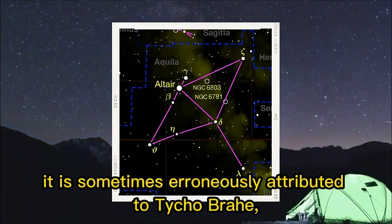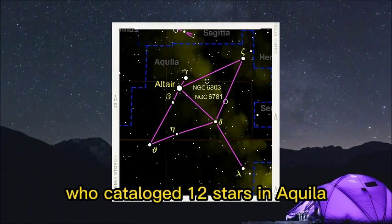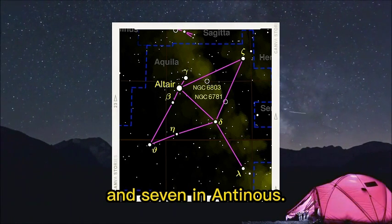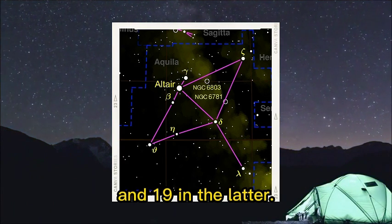However, it is sometimes erroneously attributed to Tycho Brahe, who catalogued 12 stars in Aquila and 7 in Antinus. Hevelius determined 23 stars in the former and 19 in the latter.